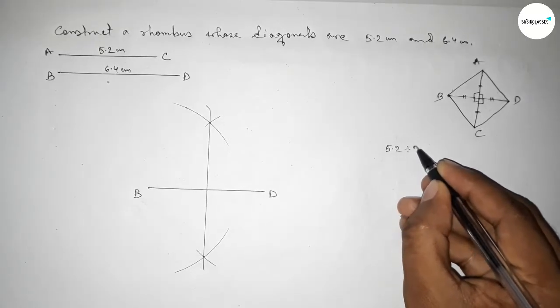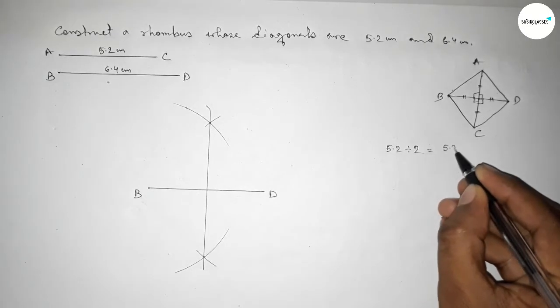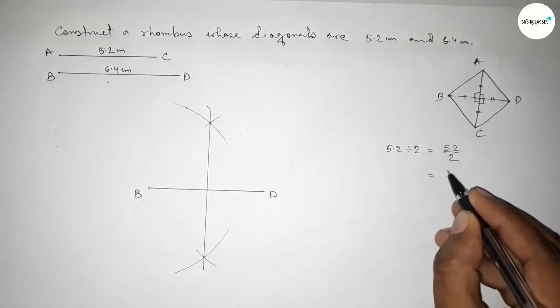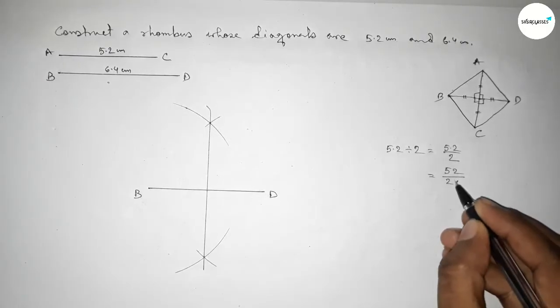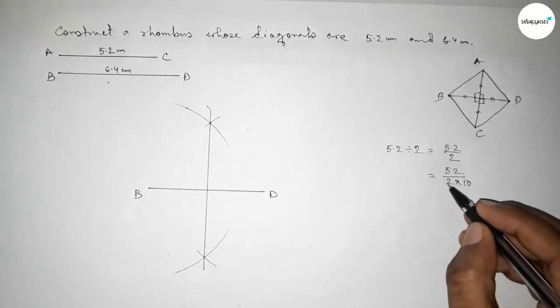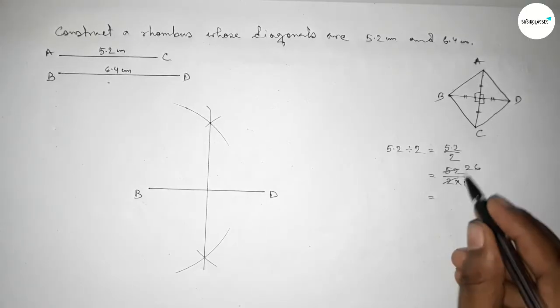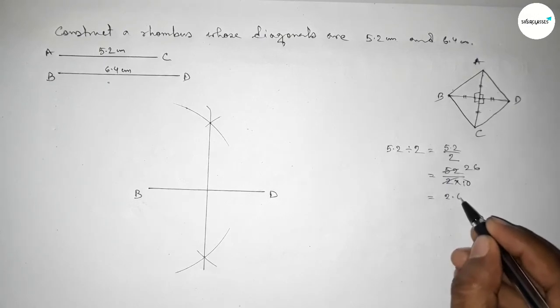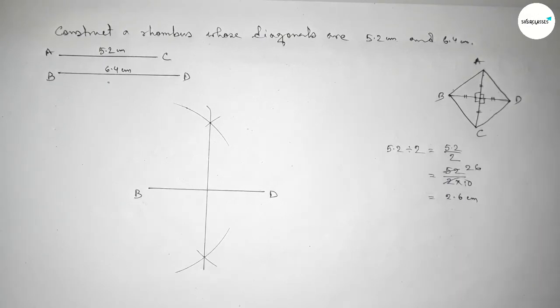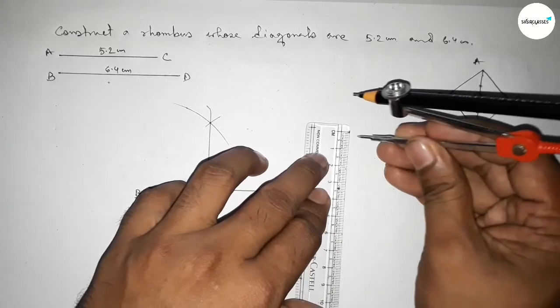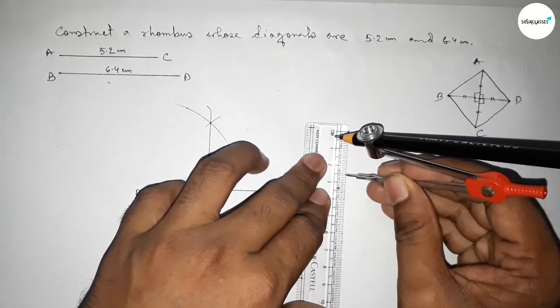Now dividing the diagonal 5.2 centimeters by two. By calculating this, if you remove the decimal, we can get 52 divided by 2, which is 26. So 26 over 10 equals 2.6 centimeters.